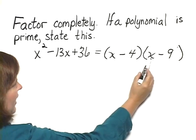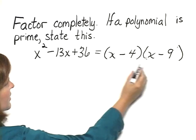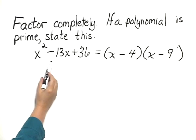If we multiply this out, x minus 4 times x minus 9, we would get x squared minus 13x plus 36.